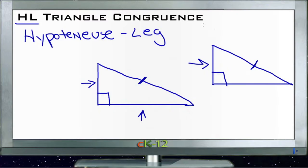But it is very important that you note that this only works for right triangles. With a right triangle, you only need to know the hypotenuse and one side, and then you'll know that the two triangles are congruent.